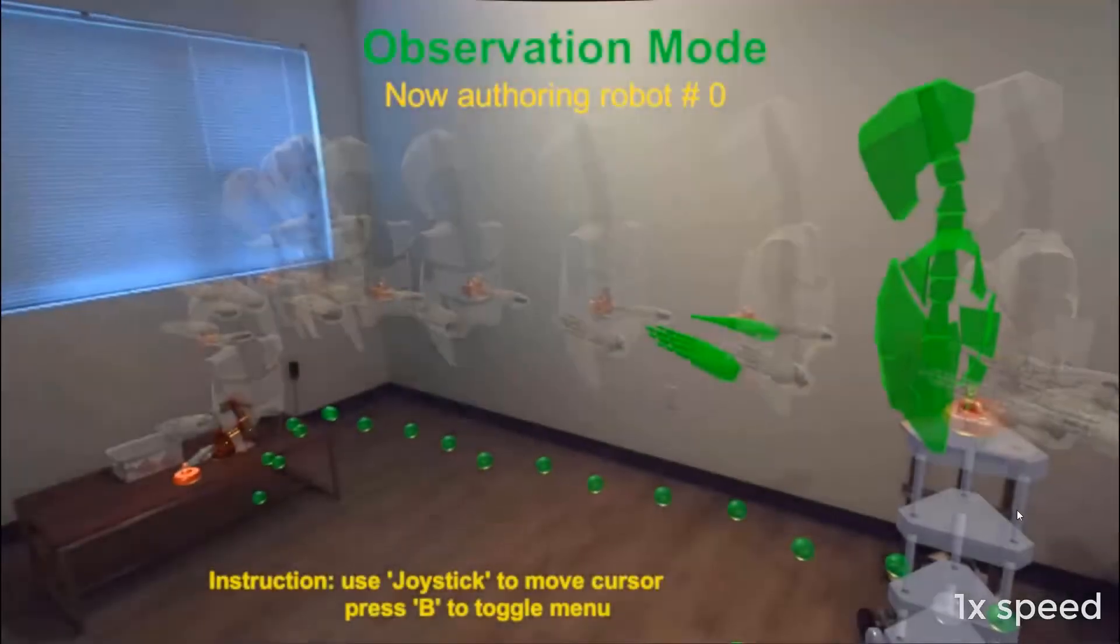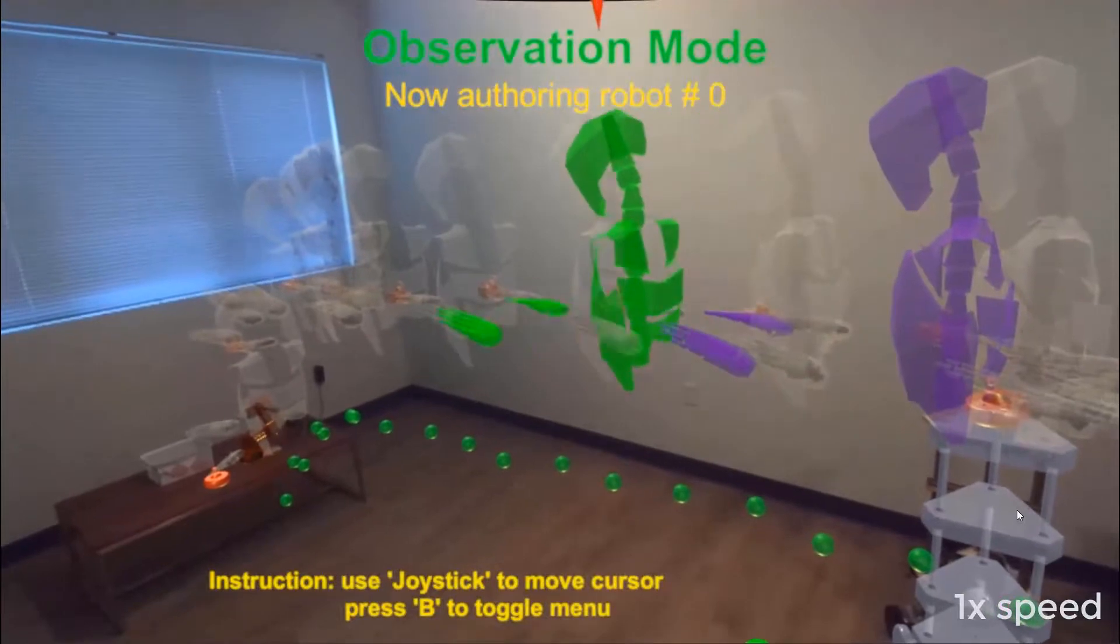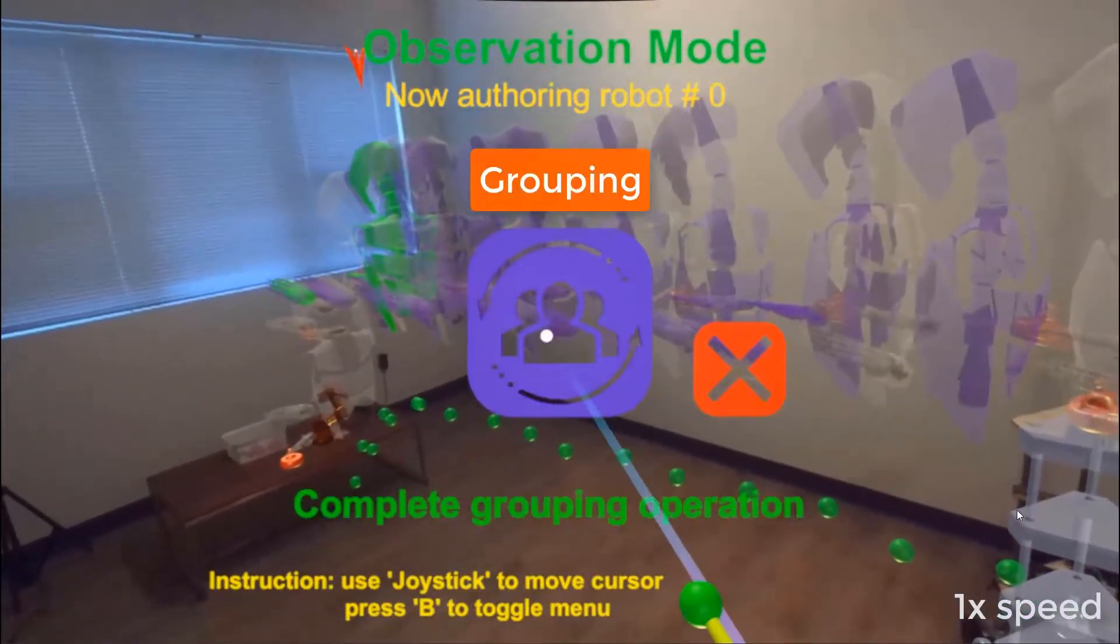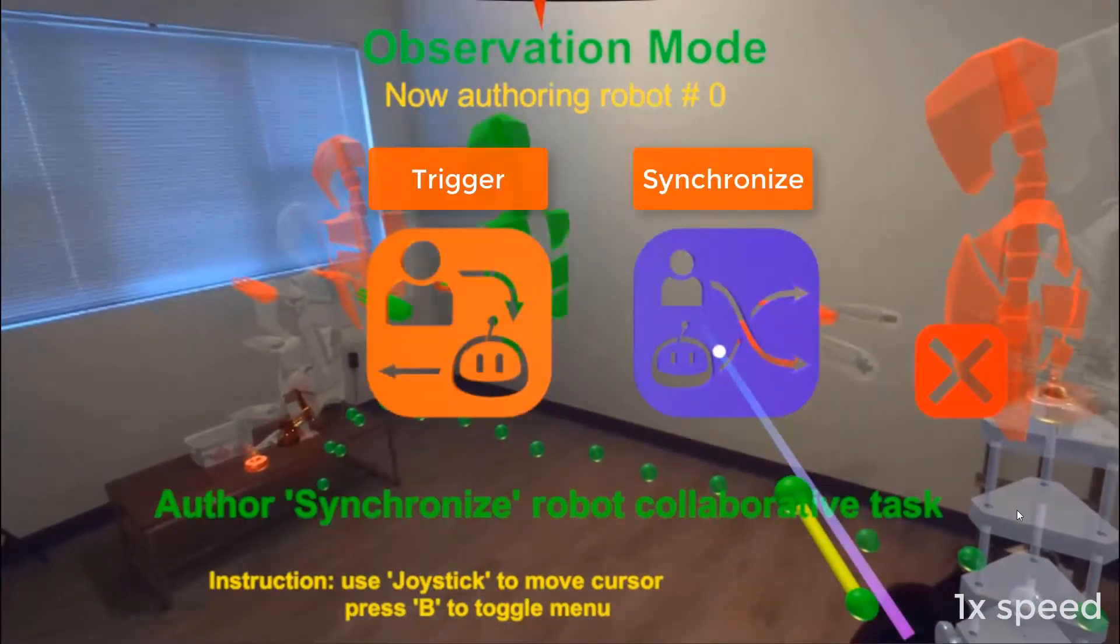Then, he enters the observation mode to visualize and edit the ARGhost. First, he needs to define the human group using the interactive cursor. Then, choose the collaboration type between either Synchronize or Trigger.